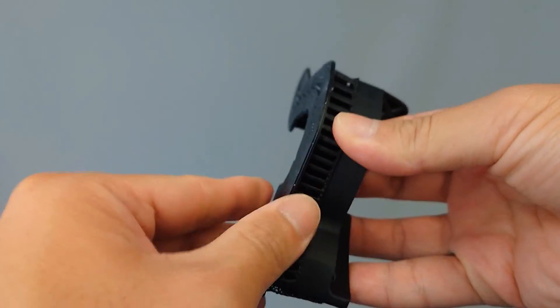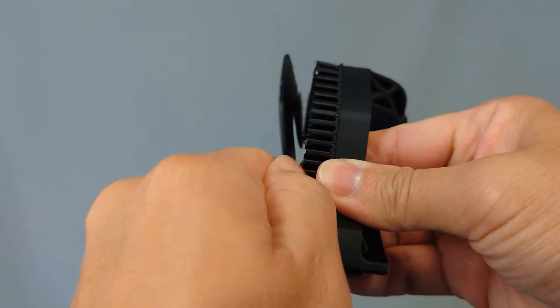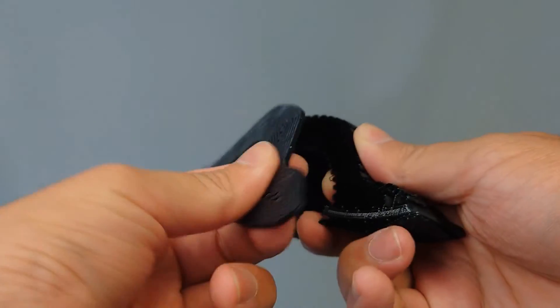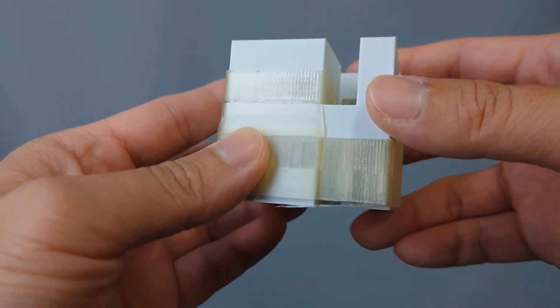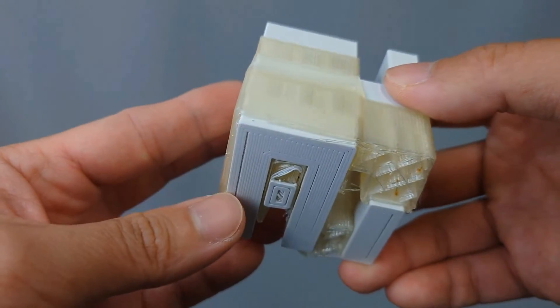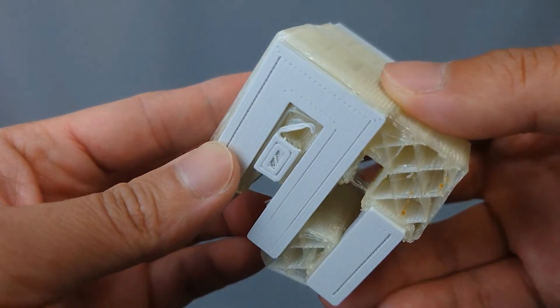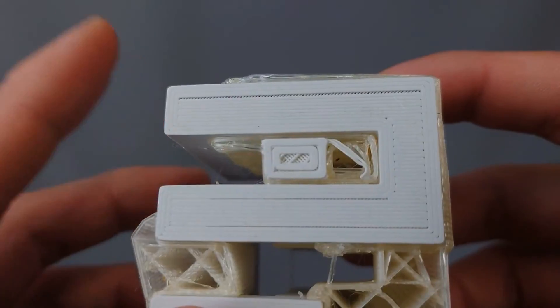This is because padded base isn't a removable part of the final model, but instead makes up the first layer, or floor, of the model. When padded base is activated, our software adjusts the first layer of the print so that it is built with a thicker extrusion bead, allowing for secure adhesion without the use of extra materials.